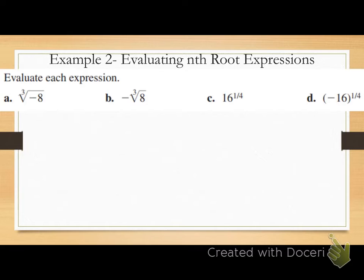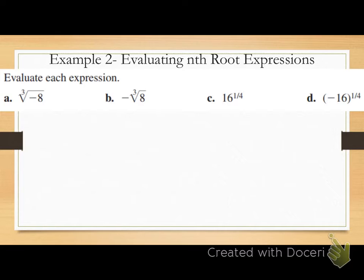Letter A: cube root of negative 8. My index is 3 — that's odd — so I have one real nth root. What number times itself times itself gives me negative 8? Negative 2: negative 2 times negative 2 is positive 4, and 4 times negative 2 is negative 8. So negative 2 is the answer.